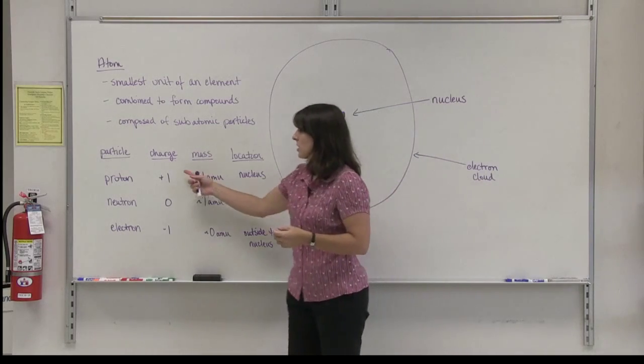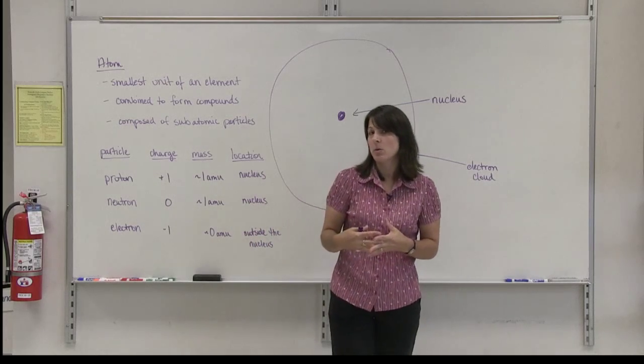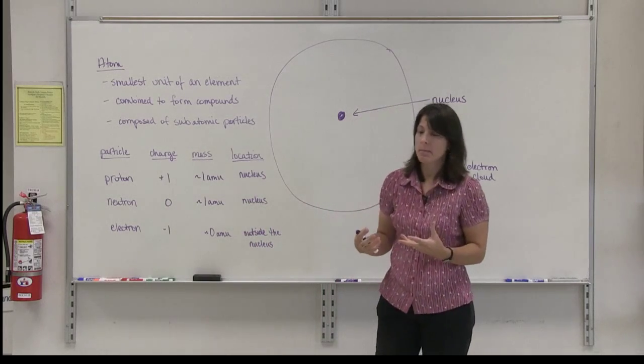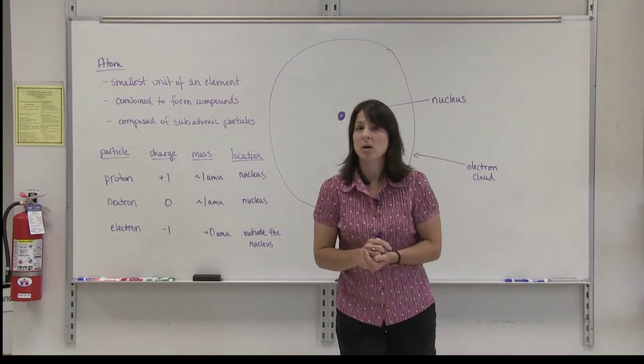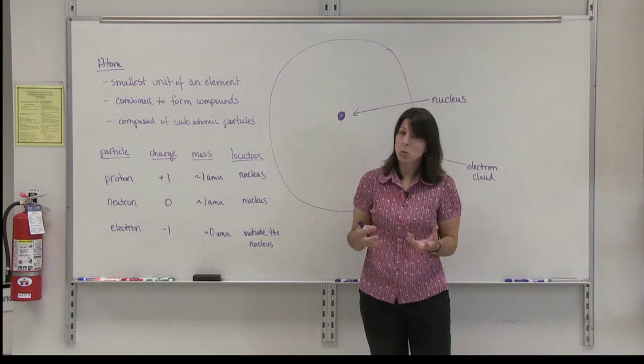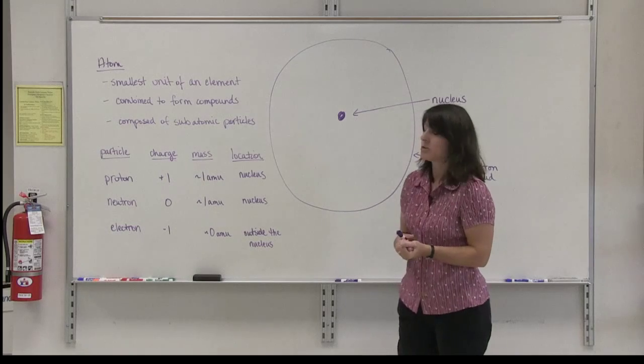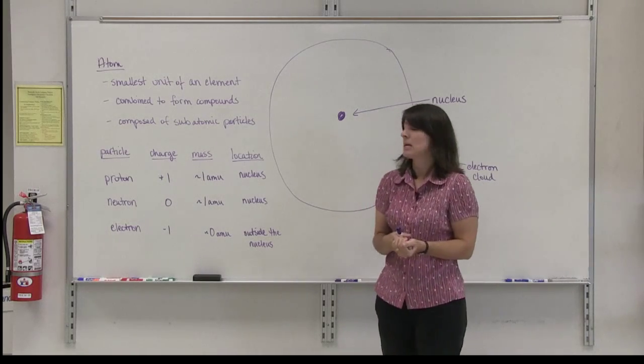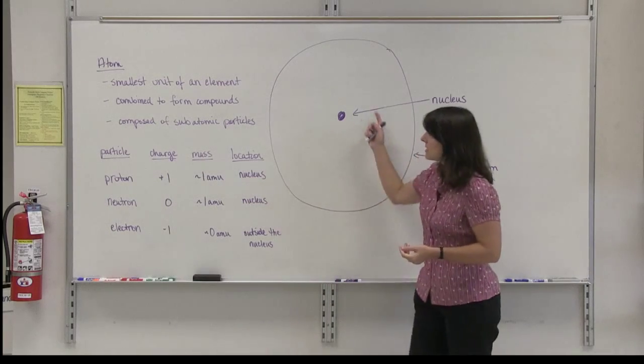The proton has a charge of positive one. Its mass is approximately one atomic mass unit, amu. An atomic mass unit is on the magnitude of one times ten to the minus twenty-fourth grams. So tiny, very small. You can't see it with the naked eye. The protons are located in the nucleus of the atom.